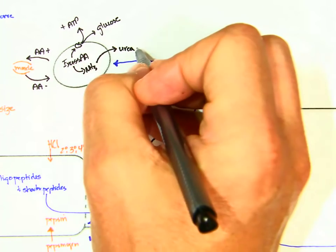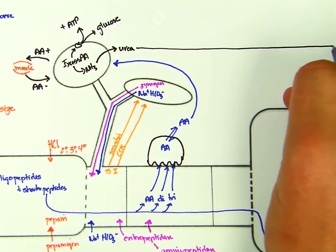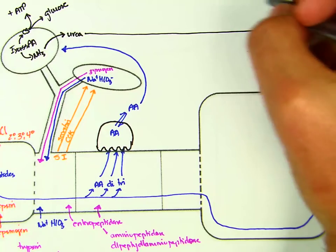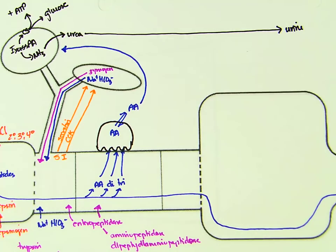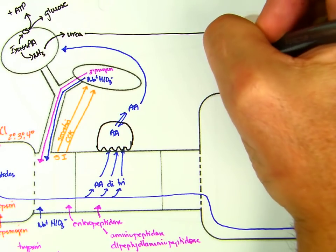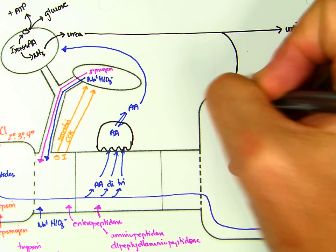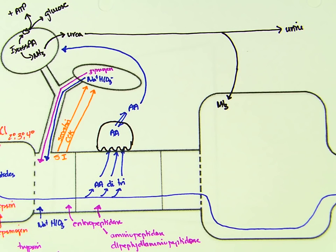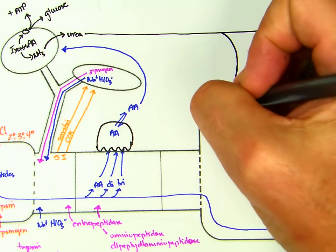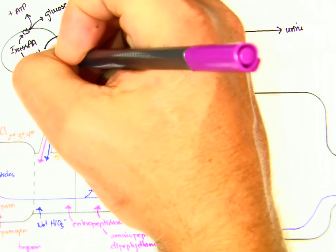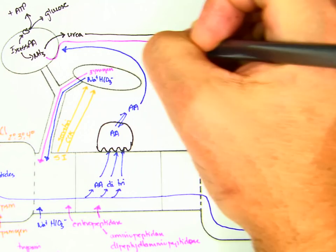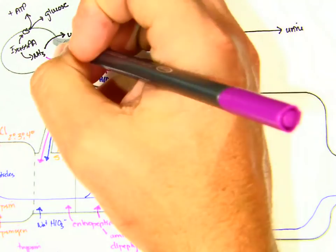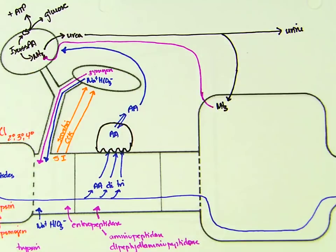Urea can also be produced, which is excreted in the urine. And urea can be recycled back to the large intestine, or through the activity of microbial urease, it becomes ammonia. That ammonia can be absorbed and go to the liver, where that ammonia can then be used to synthesize urea.